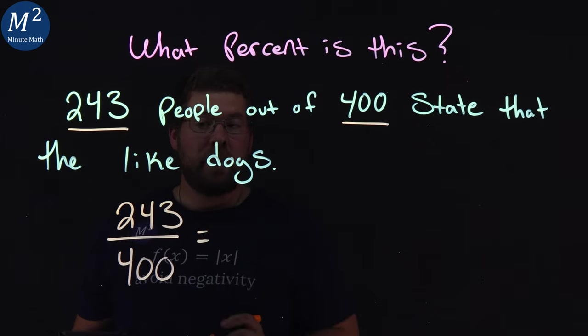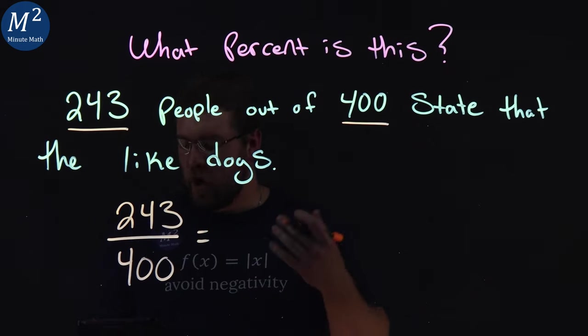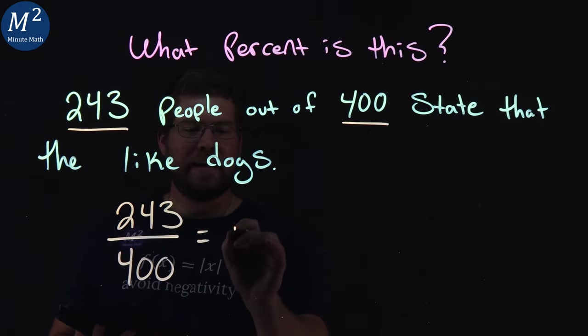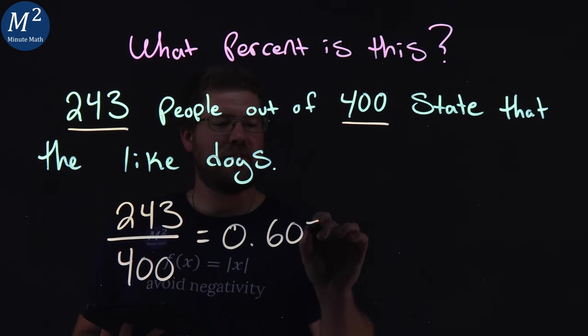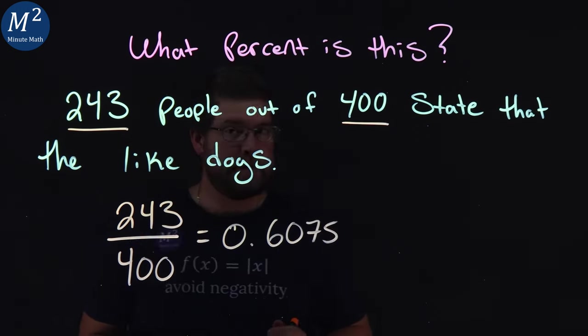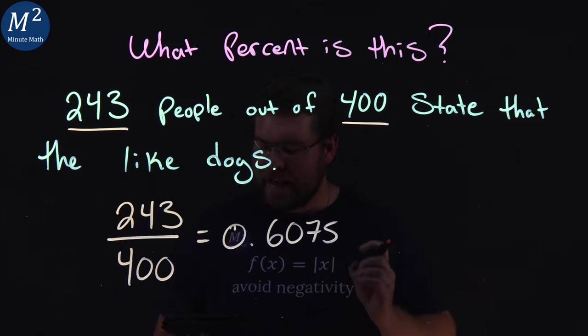Then from there we want to divide the two. So 243 over 400 comes out to be 0.6075. But we have to write this as a percent.